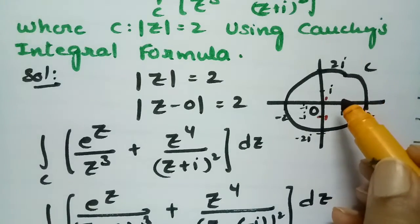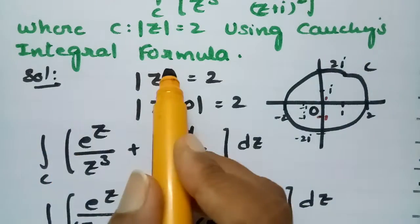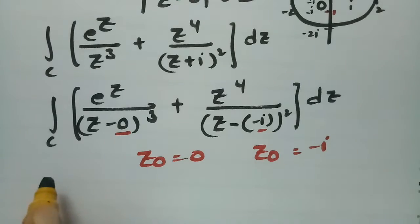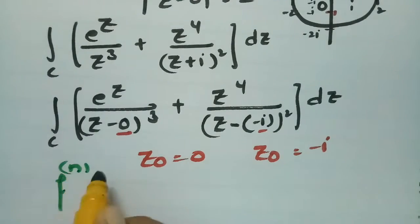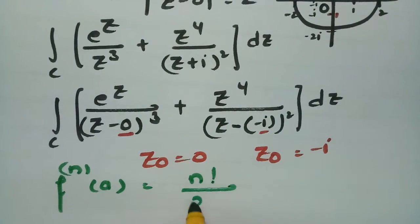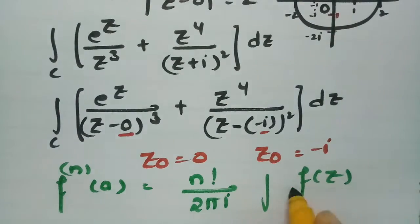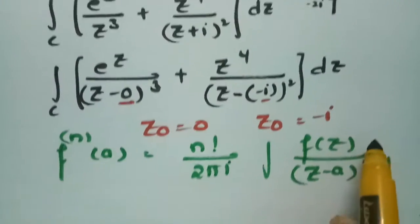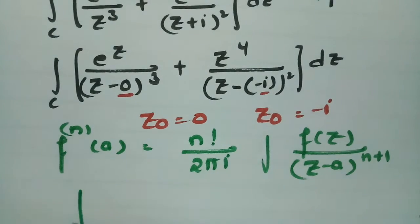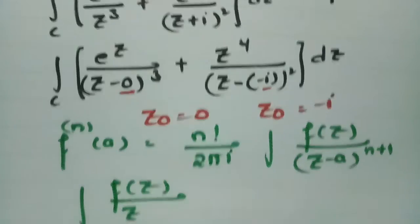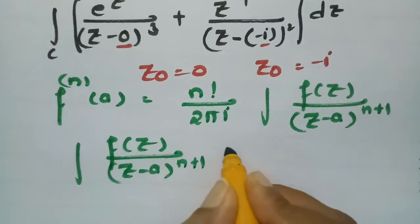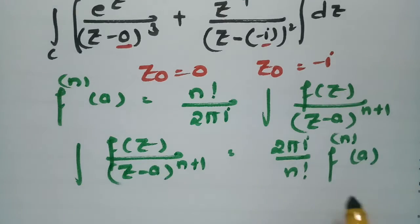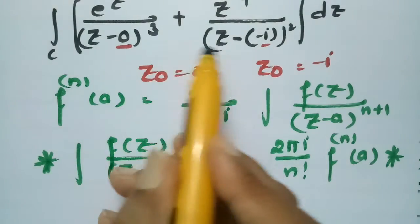Since both singular points are within the circle, Cauchy's integral formula can be applied. According to Cauchy's generalized integral formula: f^(n)(a) = n! / (2πi) · ∫ f(z) / (z − a)^(n+1) dz. Rearranging, the formula we use is: ∫ f(z) / (z − a)^(n+1) dz = (2πi / n!) · f^(n)(a).